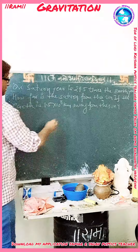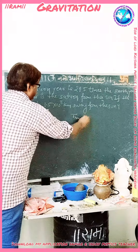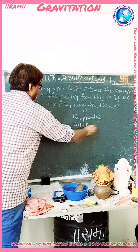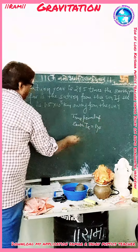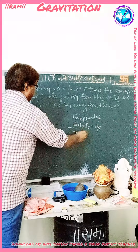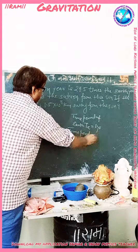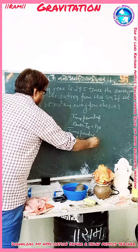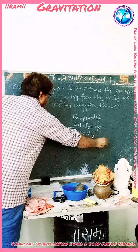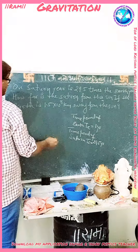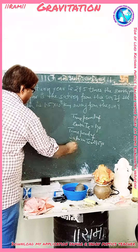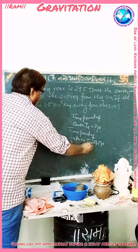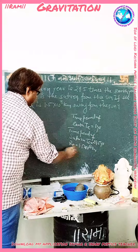Now using Kepler's law here, the time period of the Earth, that is Te, is equal to 1 year. And the time period of Saturn, that is Ts, is equal to 29.5 years. And Re, the orbital radius of the Earth, is given as 1.5 into 10 to the power 8 km. We need to find the orbital radius of Saturn.